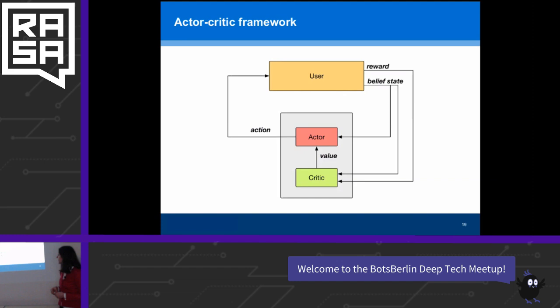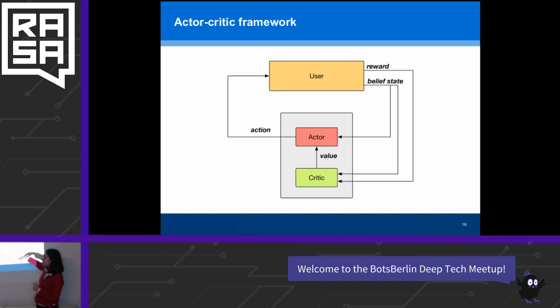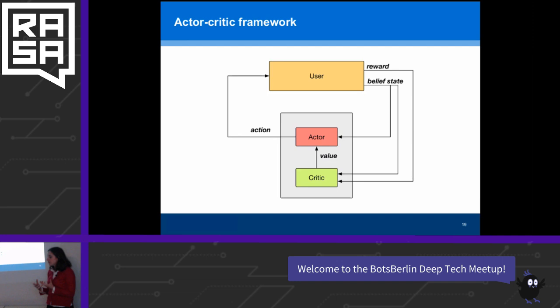In the actor-critic framework, we have our user, and the dialogue management module consists of two parts: the actor — which is the policy taking actions — and the critic, which takes into account the belief state and criticizes the actor. Based on this critic, the actor can improve.